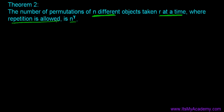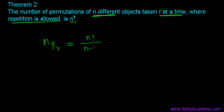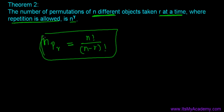So far we learned about permutations when repetition is not allowed. The formula for permutations of n objects taken r at a time without repetition is n factorial divided by (n minus r) factorial, which we also derived using the fundamental principle of counting.